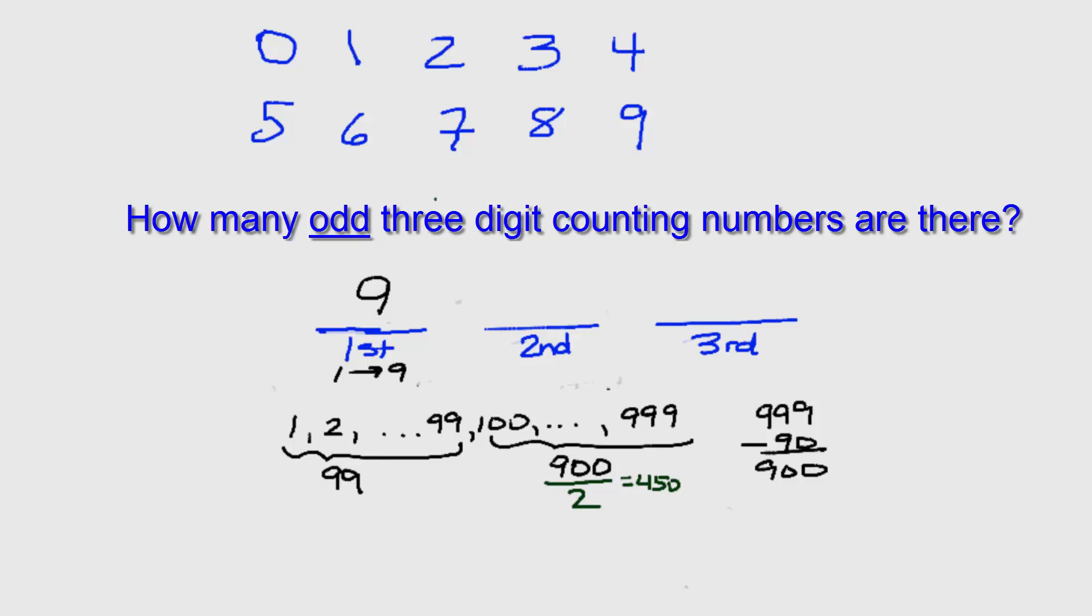For the second digit, we're still allowed to use 0, and there are no other restrictions, so we have the digits 0 through 9, or 10 digits, to choose from. But for the third digit, since we're wanting to construct an odd 3-digit number, we have to restrict ourselves to odd digits.